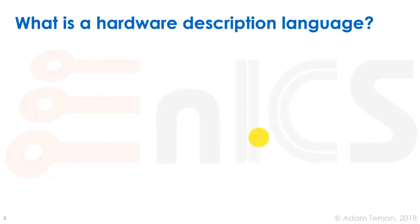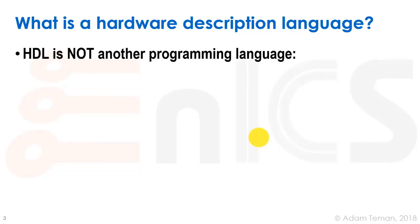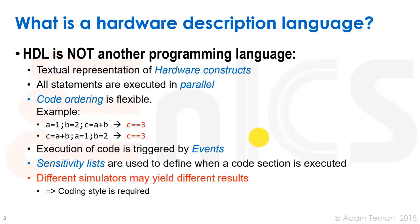Let's start with the important question: what is a hardware description language? A hardware description language, or HDL, is not just any other programming language. We're usually used to programming languages that are sequential — commands come one after the other. In hardware description languages, we're not describing the flow of data through a processor that works in sequence. Rather, we're describing actual hardware constructs that are all scattered around our chip and are all executing in parallel. That's a very hard concept — it takes a while to understand that things actually happen at the same time.